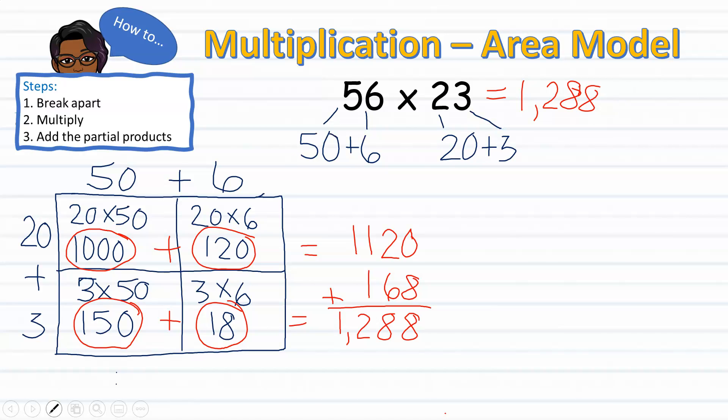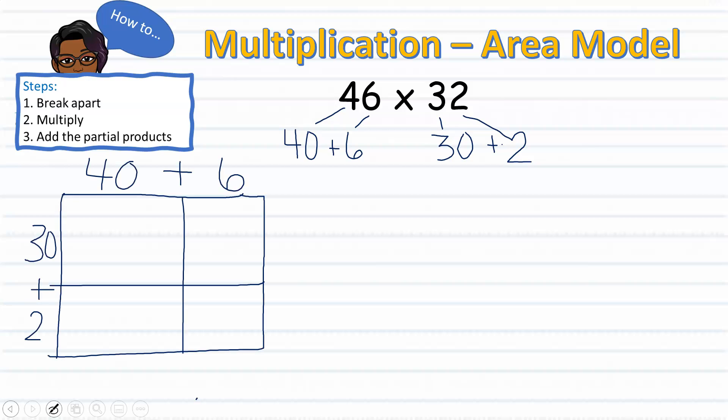In this example, we will be multiplying 46 times 32. We will begin with step one: breaking up the multi-digit factors. I have broken up my two factors into 40 plus 6 and 30 plus 2. I am ready to set up my area model to multiply. Keep in mind, the number of parts that my box model will have depends on how I broke up my factors. Here I broke up 46 into 40 plus 6, giving me two columns, and 32 into 30 plus 2, requiring two rows.